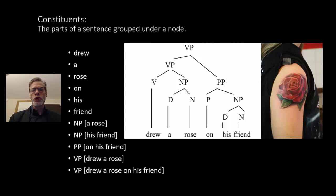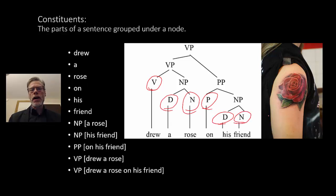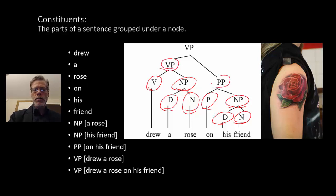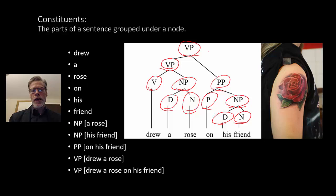The first thing we need to understand is what a constituent is. Constituents are the parts of a sentence grouped under a node. We've got these lexical categories, which means that anything under those categories are constituents. So for example, drew, a rose, on, his friend — those are all considered constituents. Then we can go higher and look at our NPs, like a rose and his friend, and those phrases are also considered constituents. Going higher, we get the VP and the PP — on his friend or drew a rose. And finally, drew a rose on his friend is also considered a constituent.